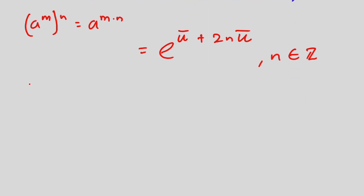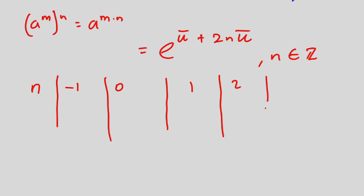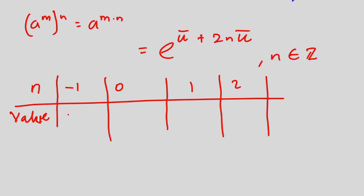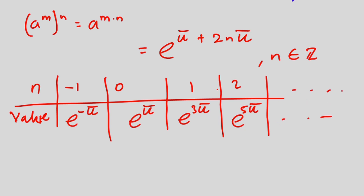So we can have infinitely many solutions to the problem. For example, giving n integer values — say negative one, zero, one, two — if you plug those into the expression: when n is negative one we get e to the power negative pi; when n is zero we get e to the power pi; when n is one we get e to the power three pi; when n is two we get e to the power five pi — and it keeps going. I hope you found the video useful. Please give it a like, subscribe, comment and share. Thanks a lot for watching, have a nice day, and see you on the next video!